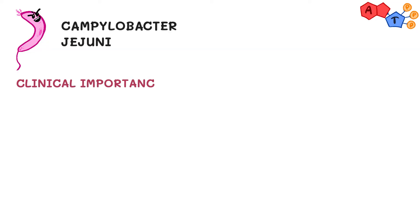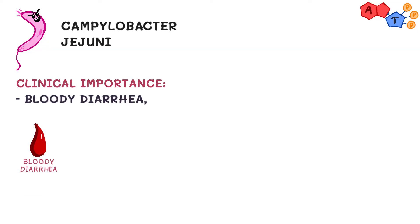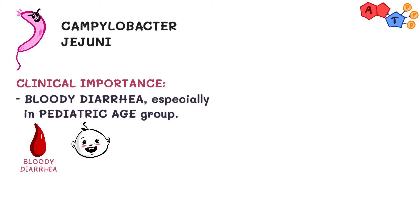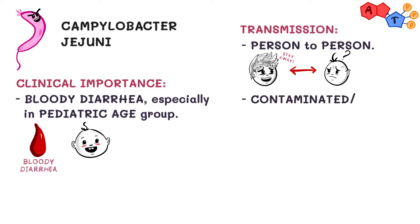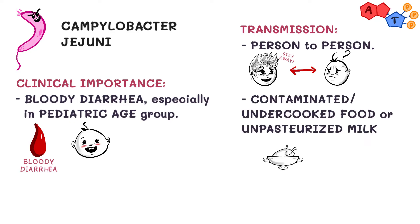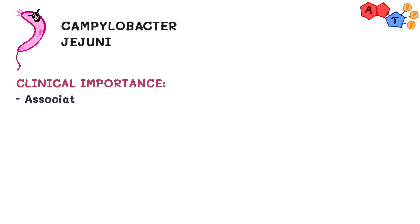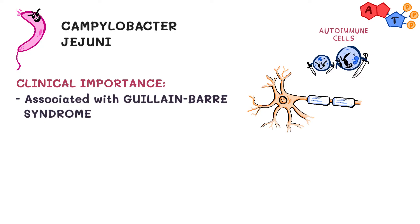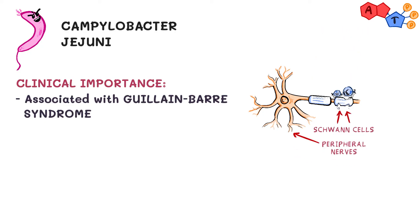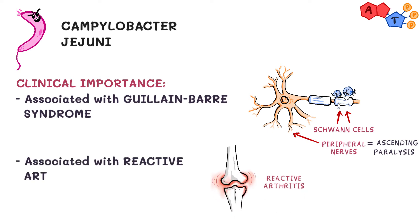For the clinical importance, Campylobacter jejuni is a common cause of bloody diarrhea, especially in the pediatric age group. It can be transmitted by person-to-person contact, through contaminated or undercooked food or unpasteurized milk, and by touching infected animals. It is also associated with Guillain-Barré syndrome, an autoimmune disease affecting peripheral nerves — mainly Schwann cells — causing ascending paralysis. It can also cause reactive arthritis.